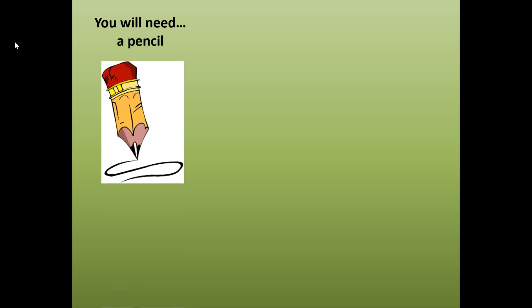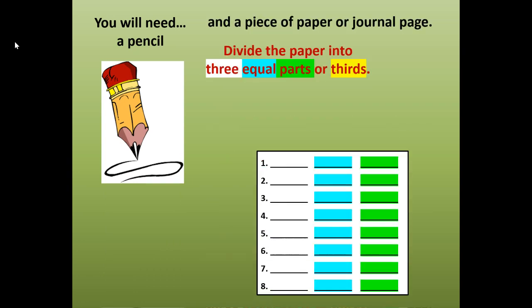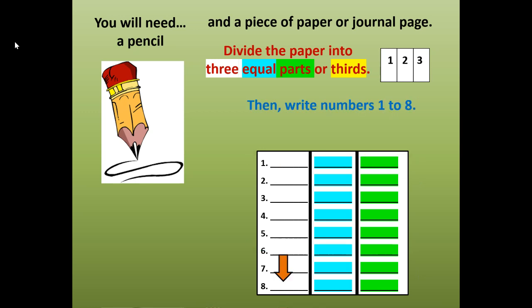For this lesson, you will need a pencil and a piece of paper or a journal page. Divide the paper into three equal parts or thirds — 1, 2, 3 — and write your numbers 1 to 8. If you don't have your materials, push pause, get your pencil and a piece of paper. When you're done writing your numbers 1 to 8, push play.